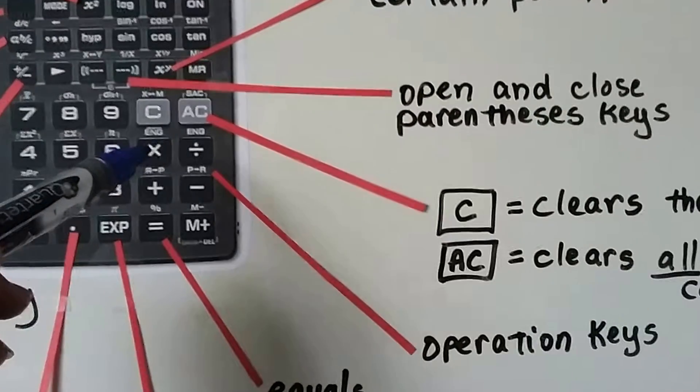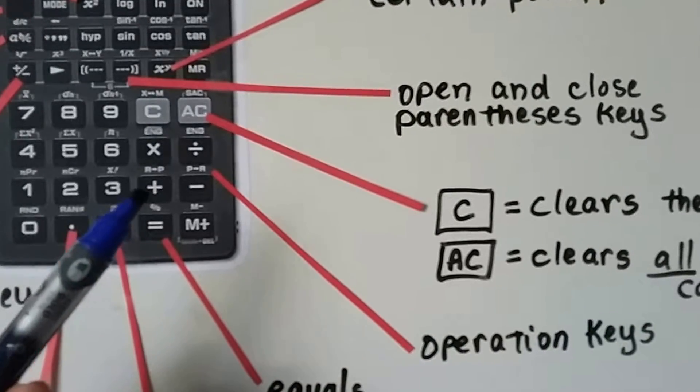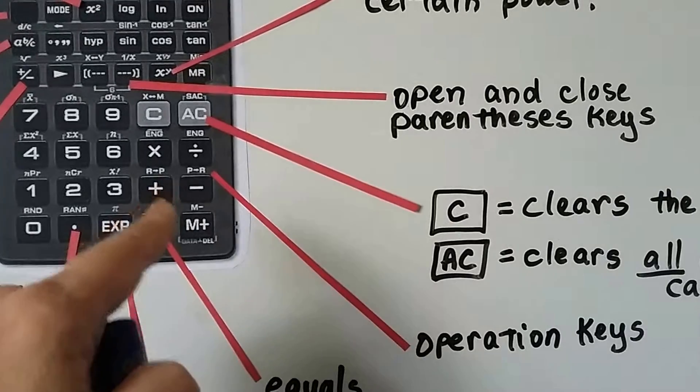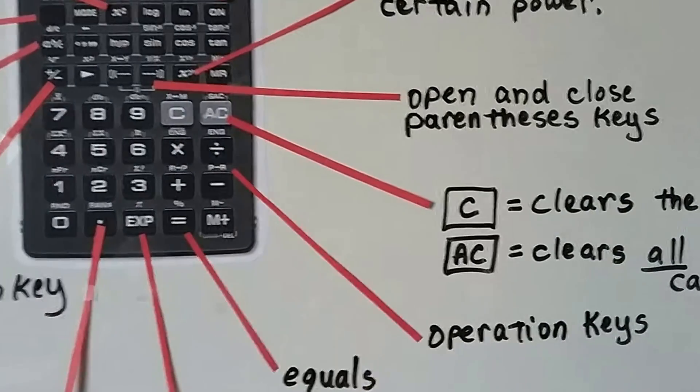Right here is the multiplication, division, addition, and subtraction keys right here. See that? These keys are the operation keys.